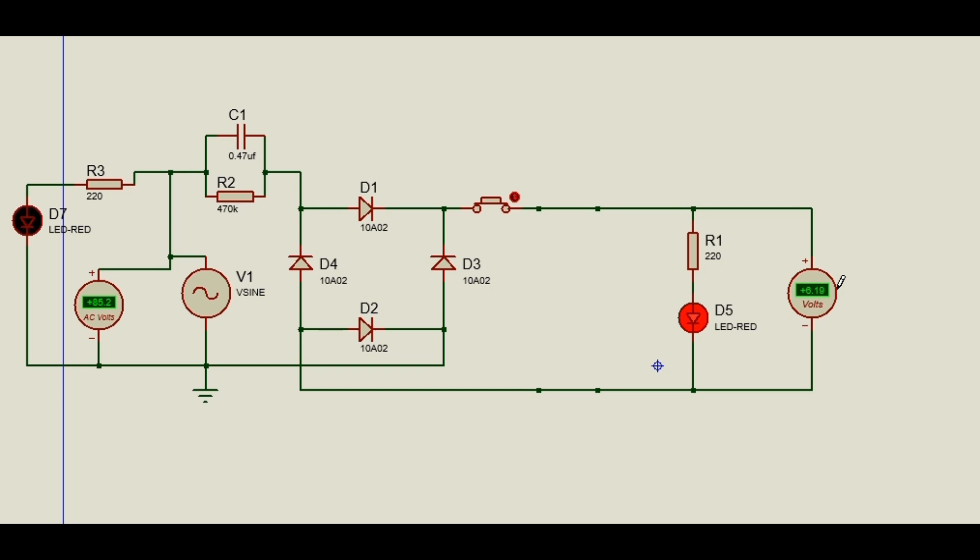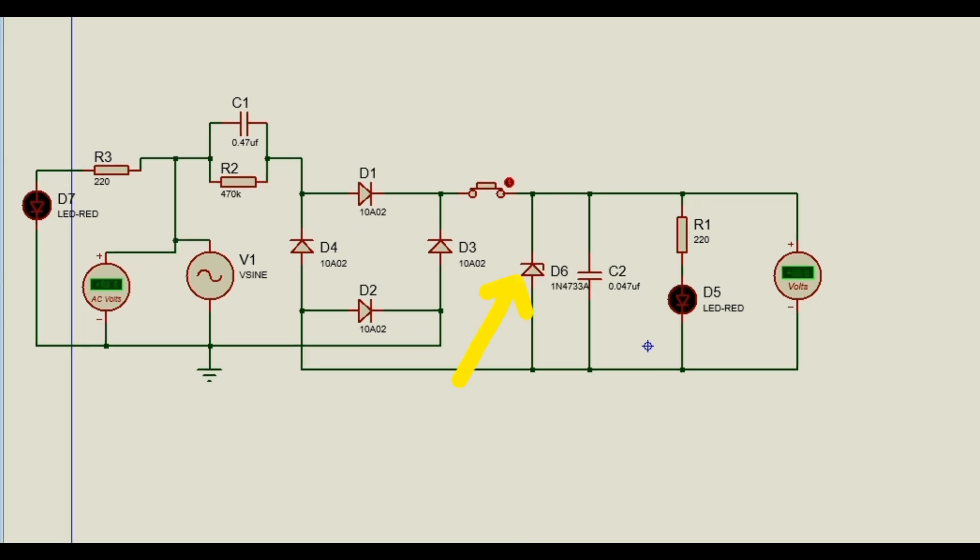But the output DC voltage has much ripples since the DC voltmeter displays a voltage whose values are fluctuating. When we add a Zener diode with a capacitor of certain values, the voltage output would be stable at about 5V.